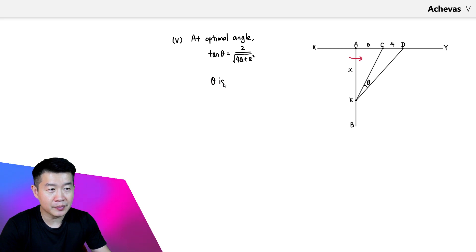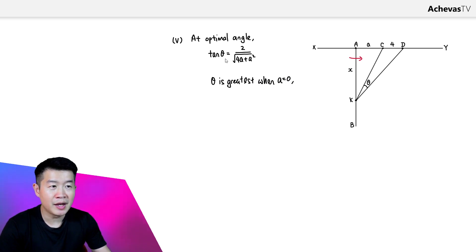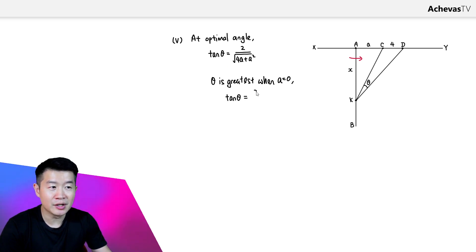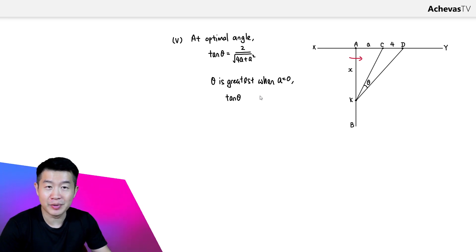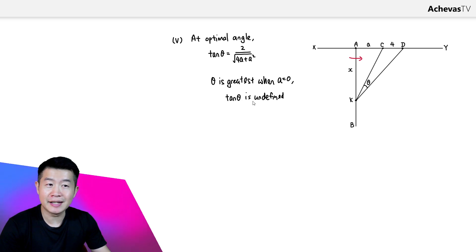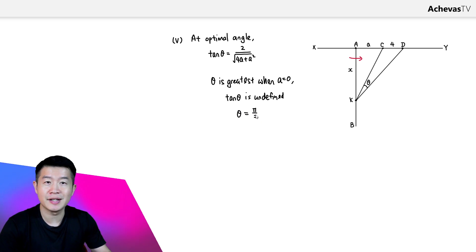When a equals 0, tangent theta equals 2 over √0, which is 2/0, and this is undefined. When tangent of an angle is undefined, the angle is π/2. So the upper limit of the greatest possible optimal angle is π/2.